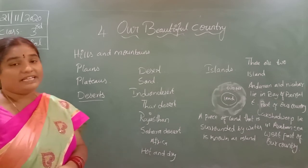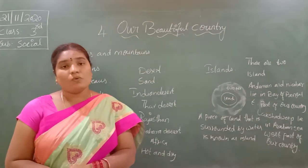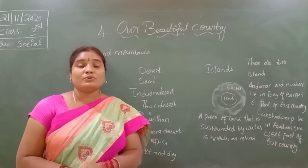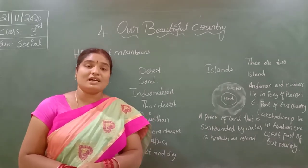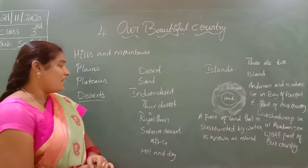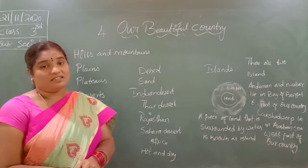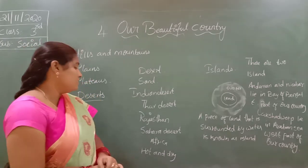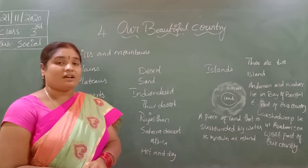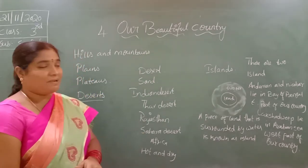Deserts are sand areas. The climate is hot and dry — the days are hot and the nights are cool. We can find camels in the desert. The camel is known as the ship of the desert. In our country, the desert is located in the west part — Rajasthan is a desert region, and the desert in Rajasthan is known as the Thar Desert. Sahara Desert is the largest desert in the world. It lies in Africa and is one of the hottest regions.